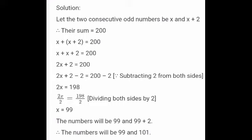Next, subtract 2 from both sides. Therefore, 2x plus 2 minus 2 equal to 200 minus 2. Plus 2 and minus 2 get cancelled. So, we get 2x equal to 200 minus 2, which is 198. For cancelling 2 from the left hand side, divide both numerator and denominator by 2. 2 gets cancelled, we get x alone. 198 divided by 2 equal to 99.